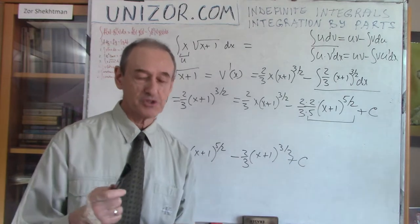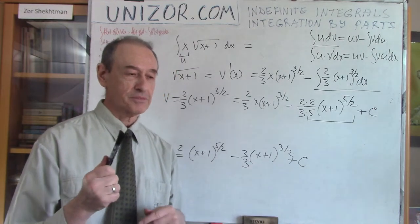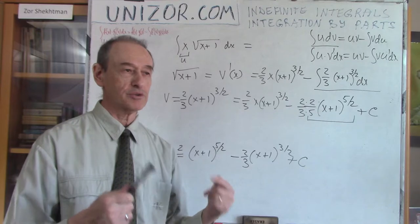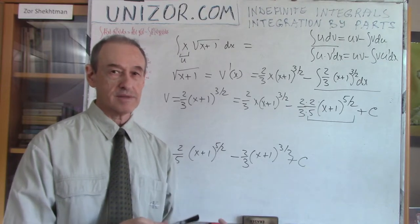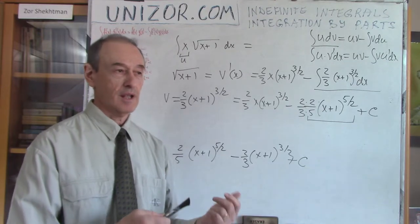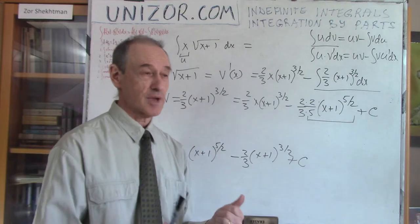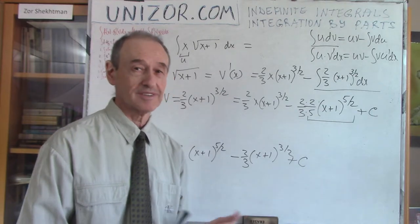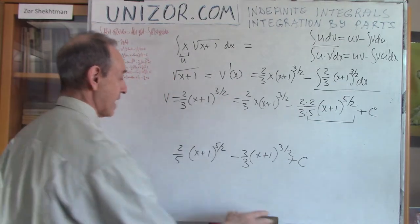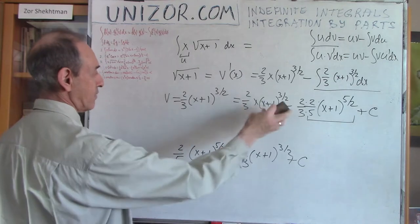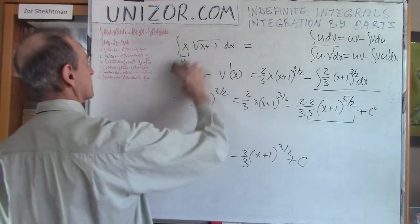By the way, I remember a joke: if no matter how you calculate you get the same result, that's mathematics. If you get different results, it's creative accounting. We are in mathematics, not accounting, and that's why these answers are exactly the same.